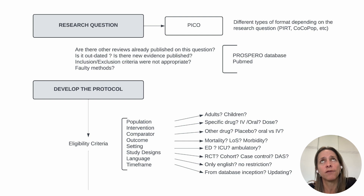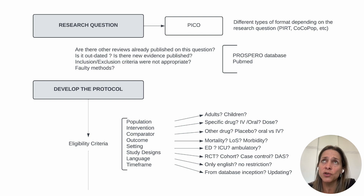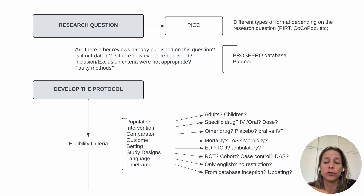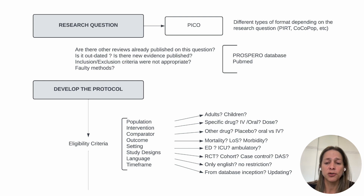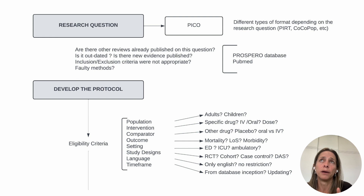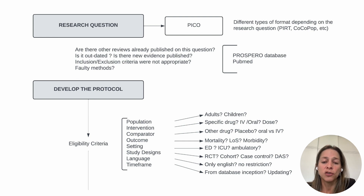For language, you need to decide if you're going to include all languages or restrict to English, which will probably introduce some publication bias. For the timeframe, you need to decide if you're going to look for studies published since database inception, or only those published in a specific period, such as the last five years. These all need to be specified in your eligibility criteria.